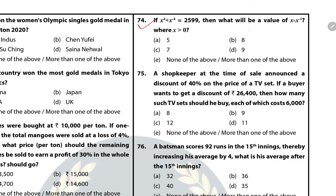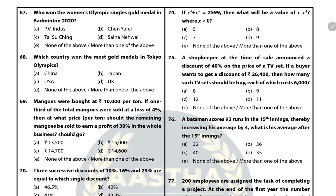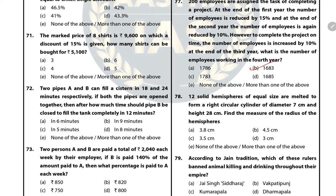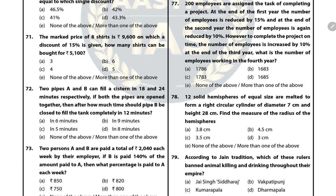Questions 74 through 78 — answers are C, D, B, B, and B respectively.